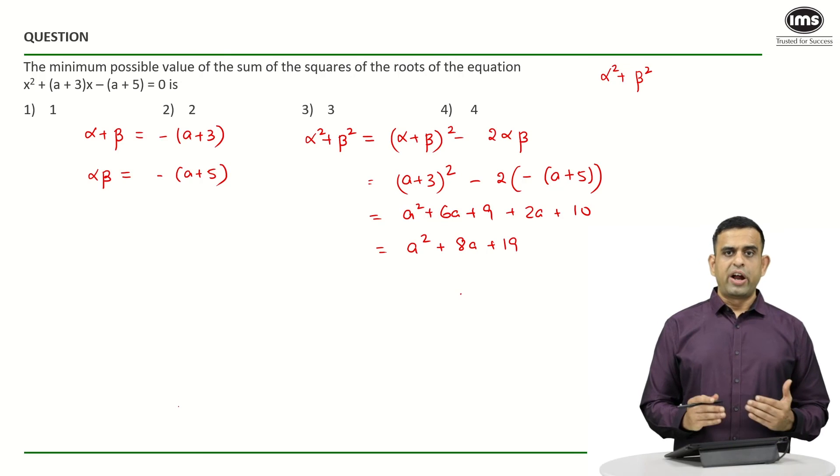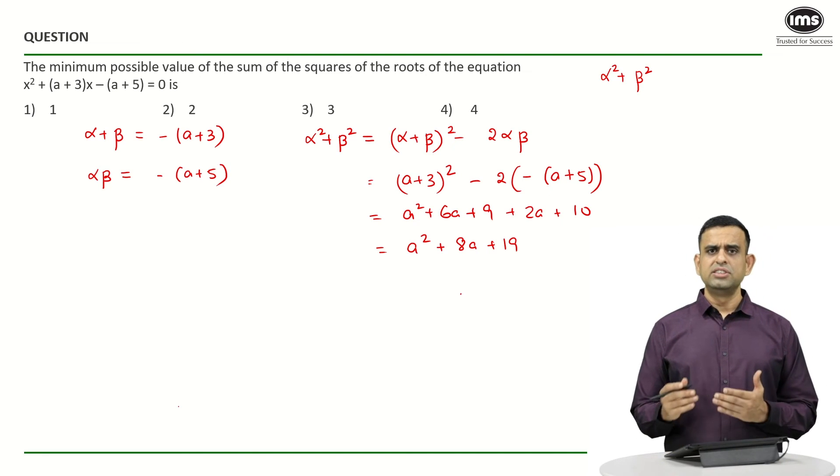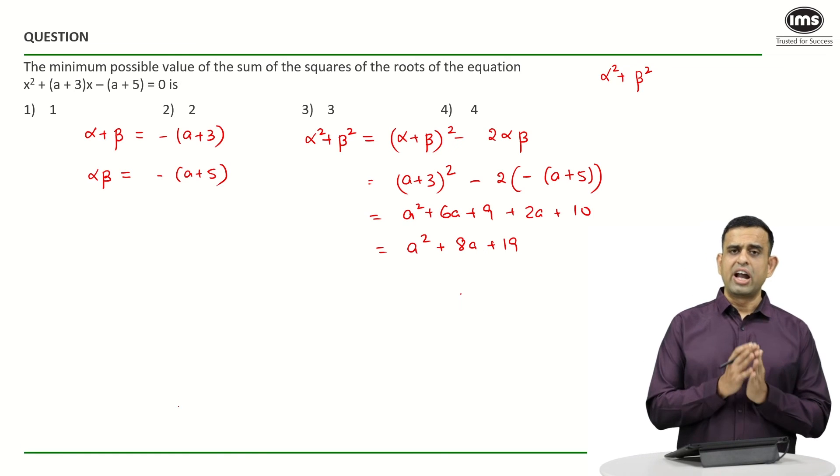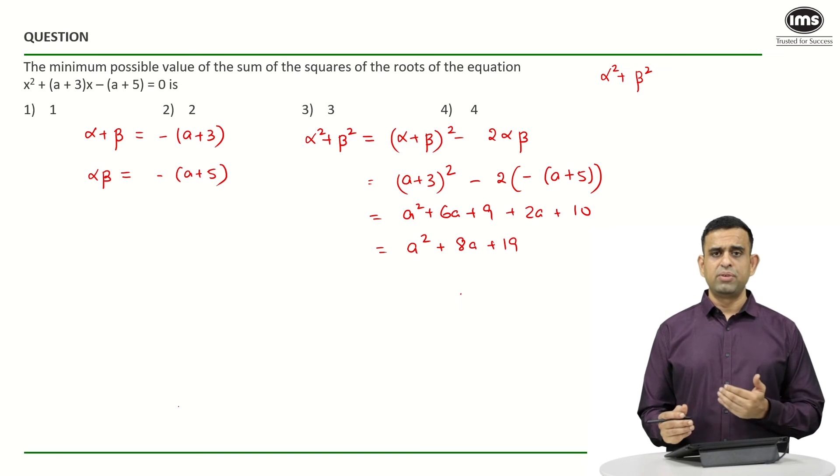Now if I look at one more approach to find out the least value of the expression a² + 8a + 19, since again remember I do not need to find out the value of a, I just want to find out the least value of the expression a² + 8a + 19.